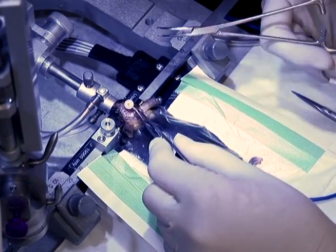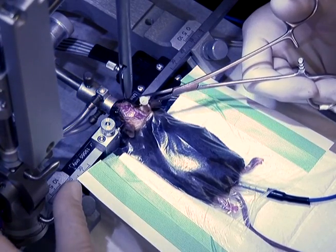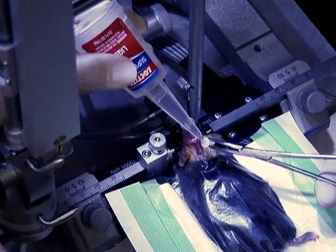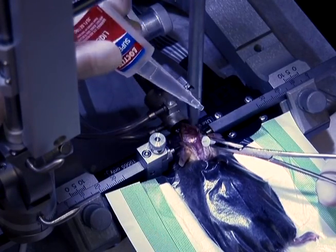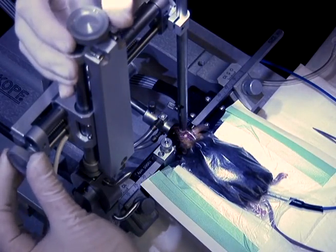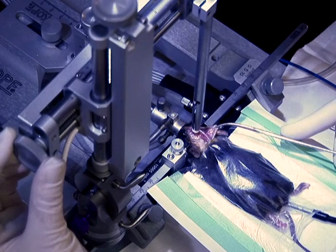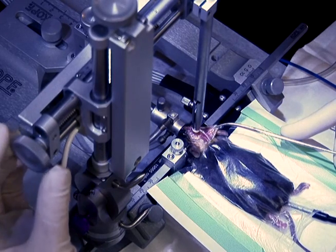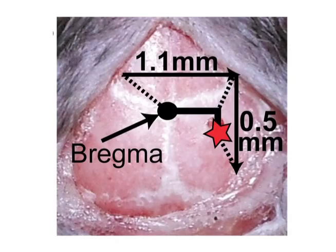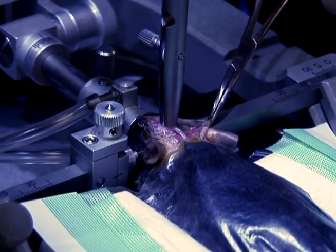With the curved hemostat, grab the cannula at the groove where the top meets the pedestal. Move the cannula driver into position and secure into place. Then, place a single drop of super glue on the base of the cannula and push the top of the cannula into the driver, positioning it so that the tubing is pointed straight back. Working quickly, touch the catheter tip to bregma and zero the coordinates on the digital display. While holding the skin out of the way with the curved hemostat, raise the catheter and move it 1.1 millimeters laterally to the right and 0.5 millimeters in the posterior direction as indicated on the diagram.